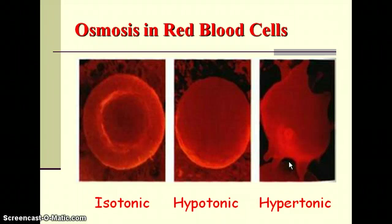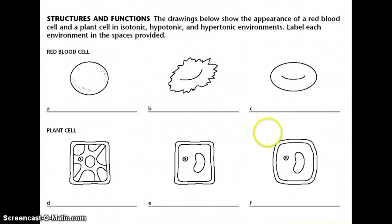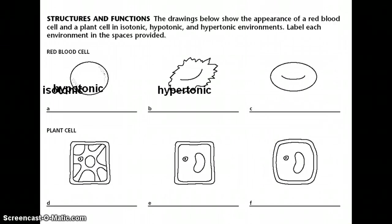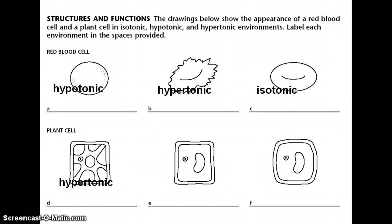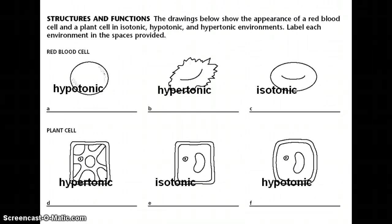Now in plants, things work a little bit differently. We have red blood cells at the top for comparison. In plant cells, a hypertonic cell is going to be a withered cell — the plant will wither up. In isotonic conditions, the plant looks pretty good but not great. In plants, being hypotonic is great — it puts a lot of turgor pressure on the cell wall and makes the plant stand up really nice and full.